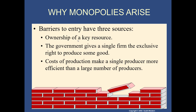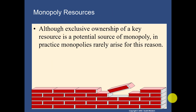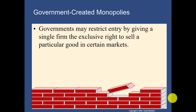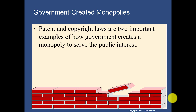For example, it would be very difficult for a new telecom company to enter the Caribbean because the cost of putting down roads, rails, or wires is so high that certain industries can only be managed by one main firm. Although exclusive ownership of a key resource is a potential source of monopoly, in practice monopolies rarely arise for this reason. Government may restrict entry by giving a single firm exclusive rights, such as through patent and copyright laws.